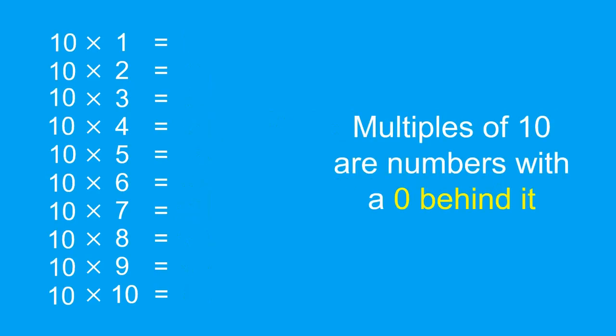Multiples of ten is quite easy. Any number times ten has an answer of that same number and you stick a zero behind it. So all these numbers here are copied over and we stick a zero behind them.